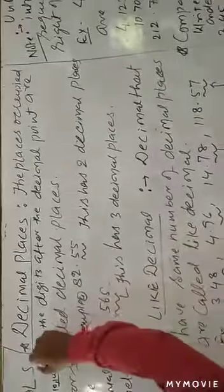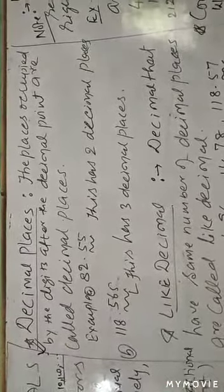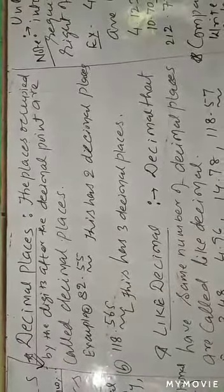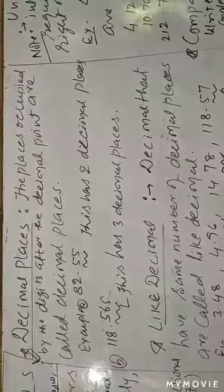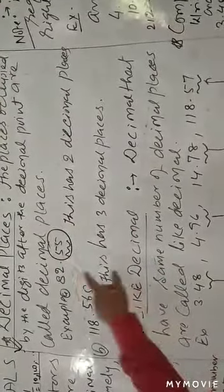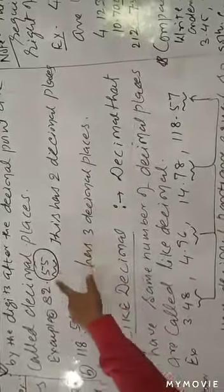Now the decimal places — what are decimal places? The places occupied by the digits after the decimal point are called decimal places. The digits written after the decimal point are called decimal places. For example, 0.55 — this has two decimal places.